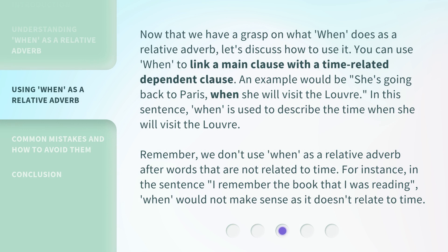Now that we have a grasp on what 'when' does as a relative adverb, let's discuss how to use it. You can use 'when' to link a main clause with a time-related dependent clause. An example would be: 'She's going back to Paris when she will visit the Louvre.' In this sentence, 'when' is used to describe the time when she will visit the Louvre.